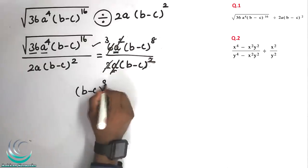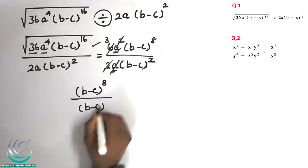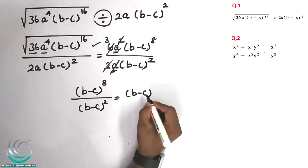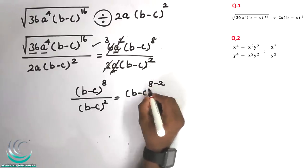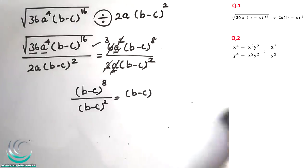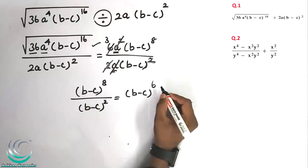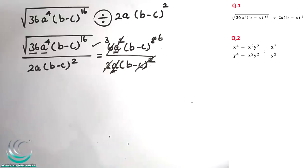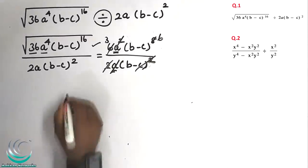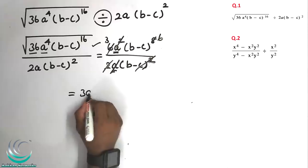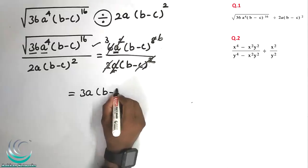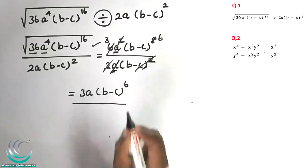(b-c) power 8 divided by (b-c) power 2 — powers are minused: 8 minus 2 equals 6, so (b-c) power 6. This is the final answer.